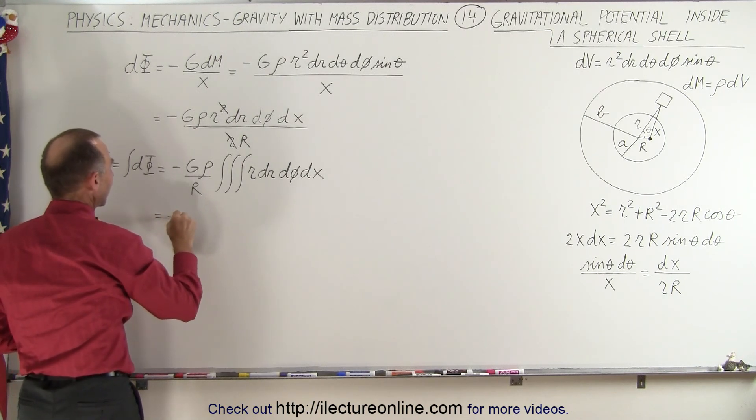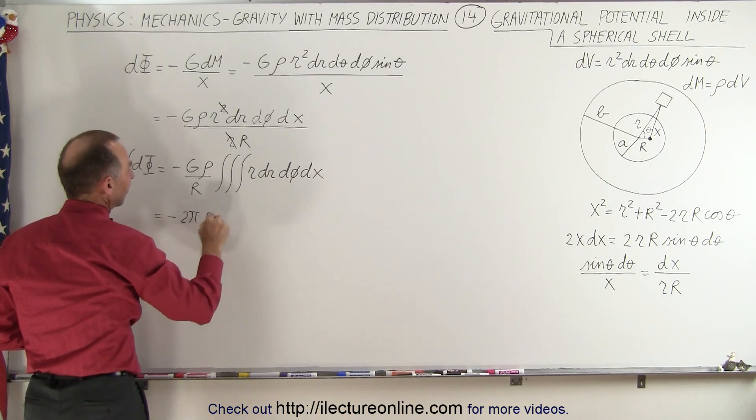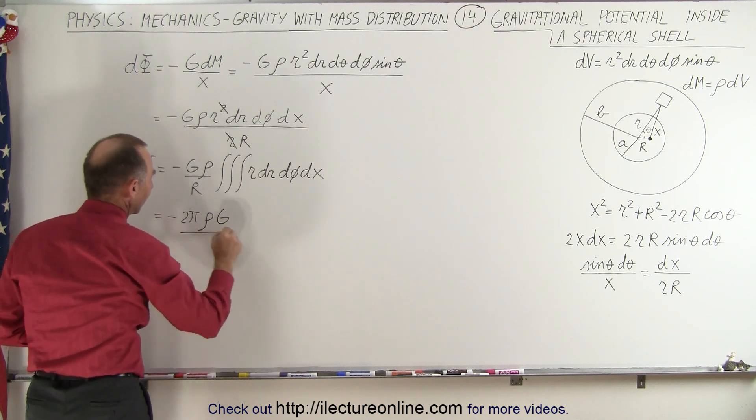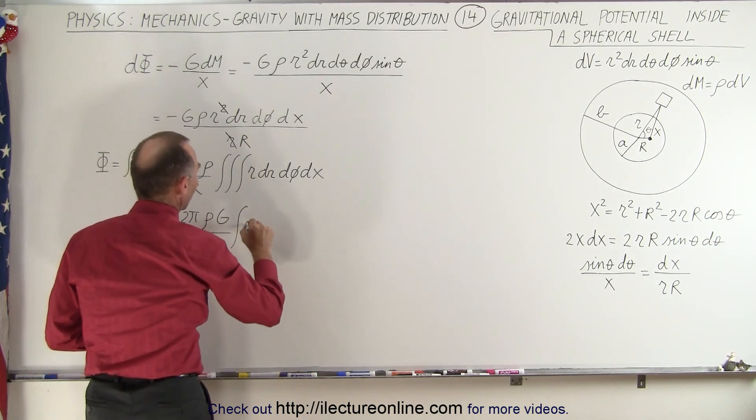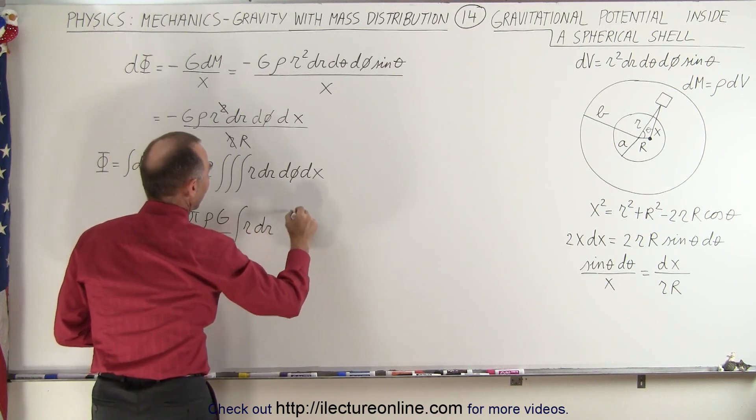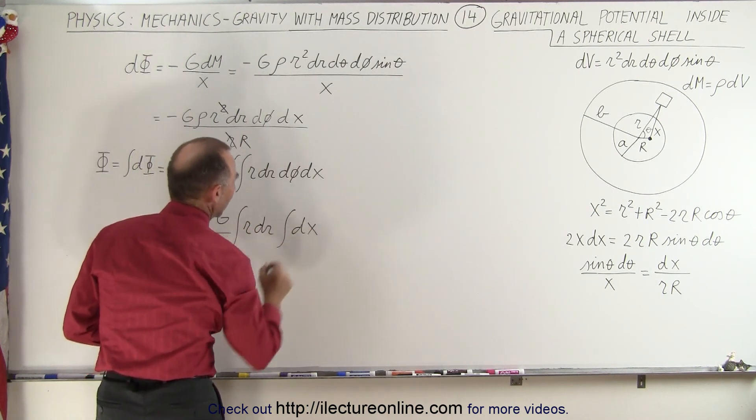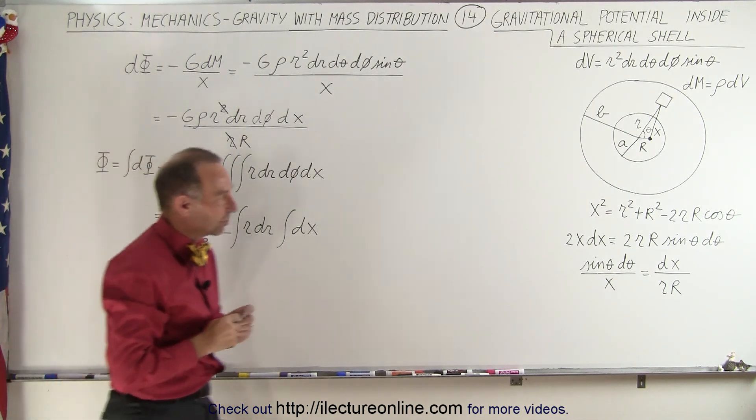This becomes equal to minus 2 pi times the density times the gravitational constant divided by r, and now we have two integrals left: r dr and the integral of dx. Now we need the limits of integration for dx.